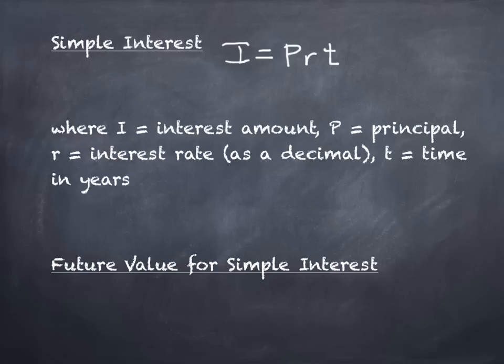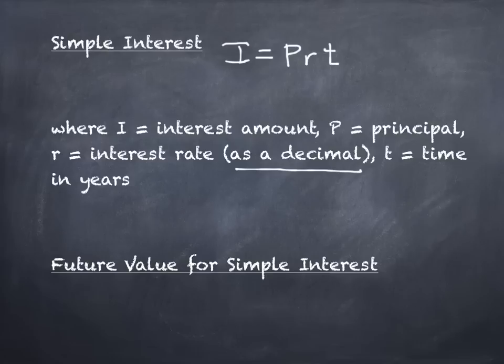Remember that R, the interest rate, must be expressed as a decimal. If you put in 7% as 7 instead of 0.07, you'll find you accrued way more interest than you should have. Also, time T is measured in years. If your book says 18 months or 48 months, you have to convert it into years to use this formula.